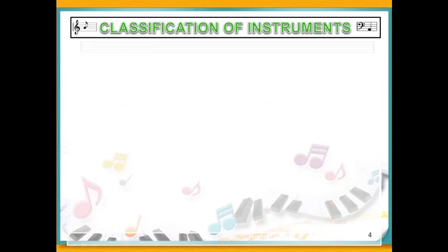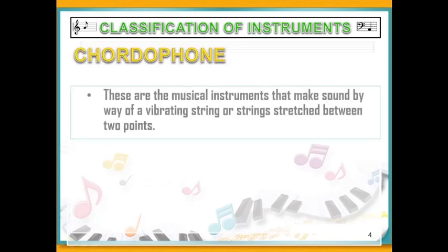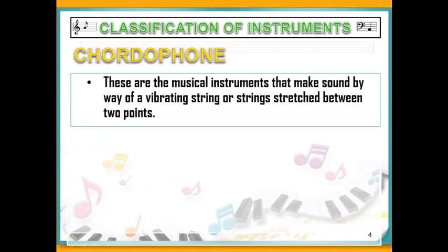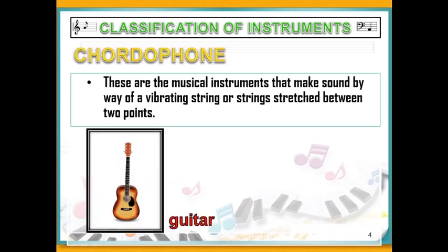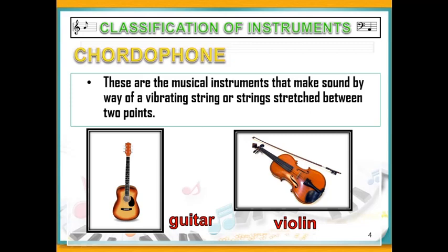Another classification of instruments is Chordophone. These are musical instruments that make sound by way of vibrating strings attached between two points. Did you know that before nylon was discovered as a string for guitars and violins, intestines of animals like cows, cattle, and some horses were used as strings? Guitar and violins are the best examples of Chordophones. Harp is another Chordophone.